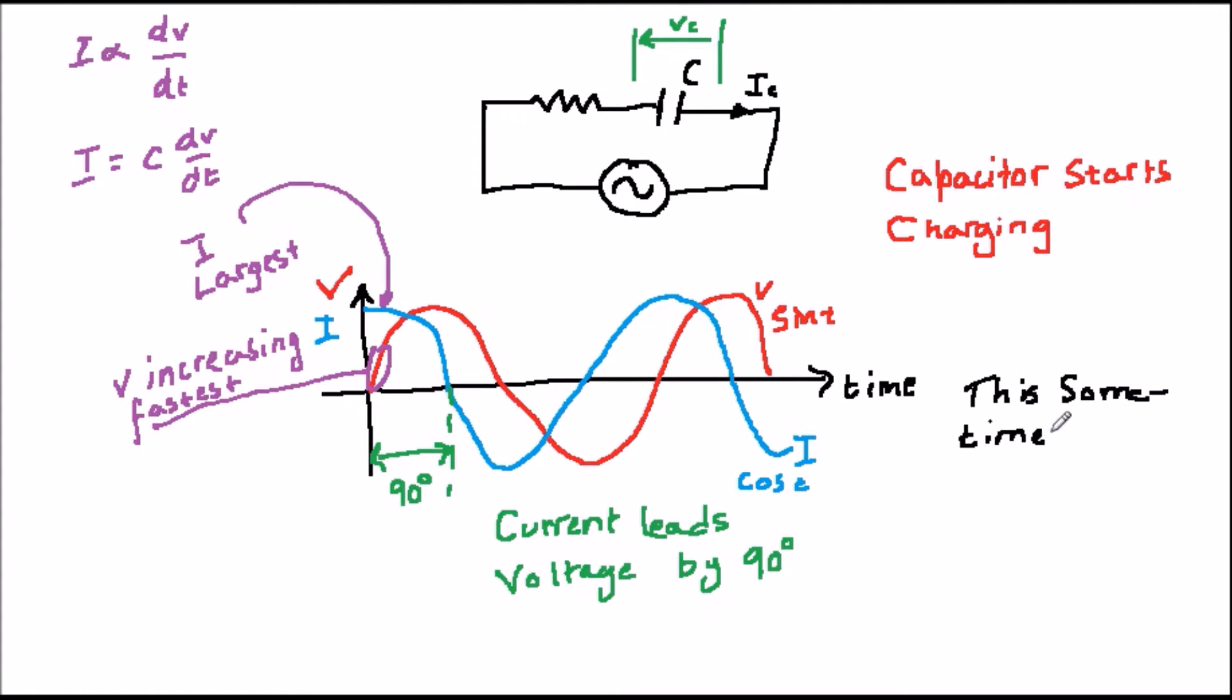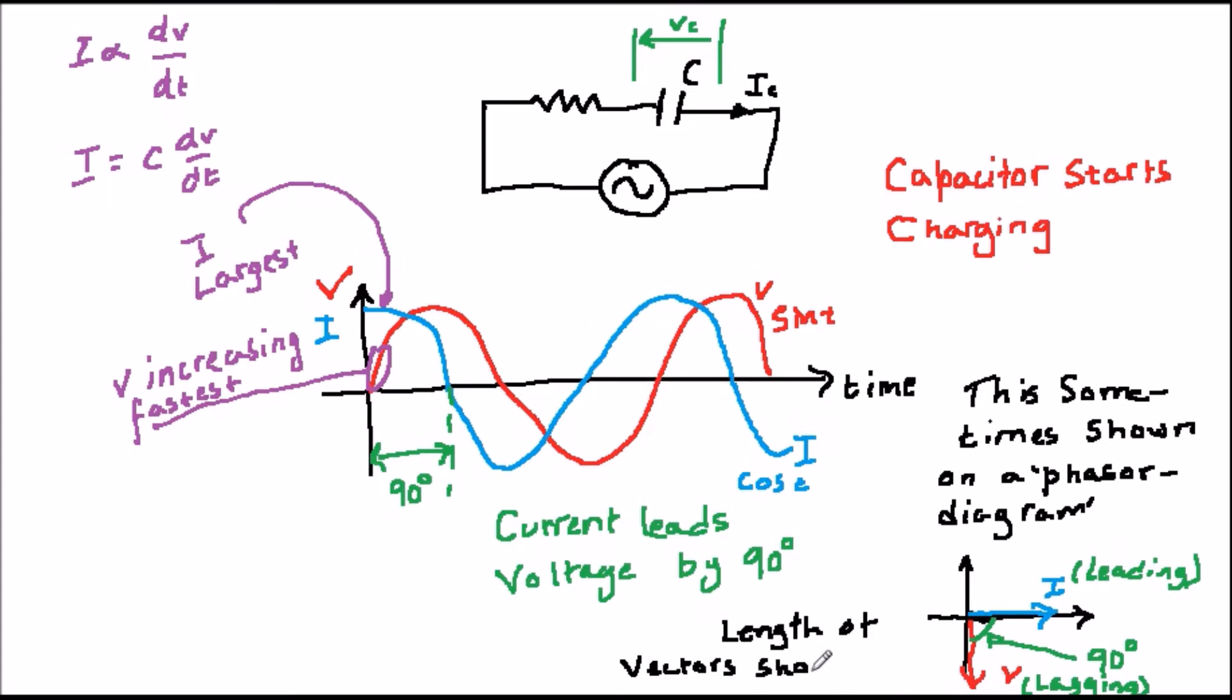Now, if V is a sine wave, as shown in the previous diagram, then I is equal to C dV by dt V sine omega t. And differentiating the sine wave, we get that I is equal to C omega V cos omega t. So we've just proved mathematically what we worked out from common sense using a diagram.